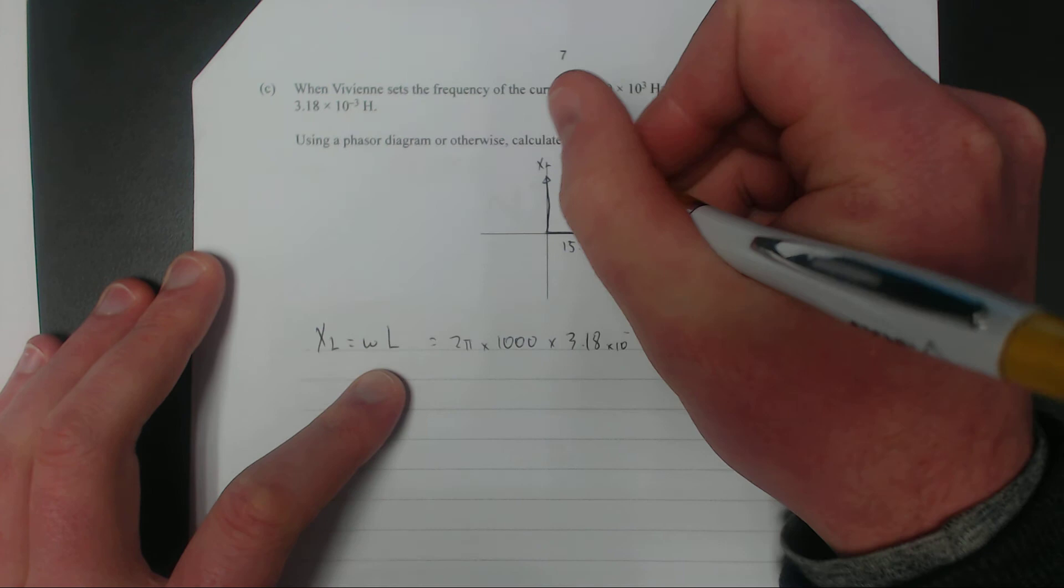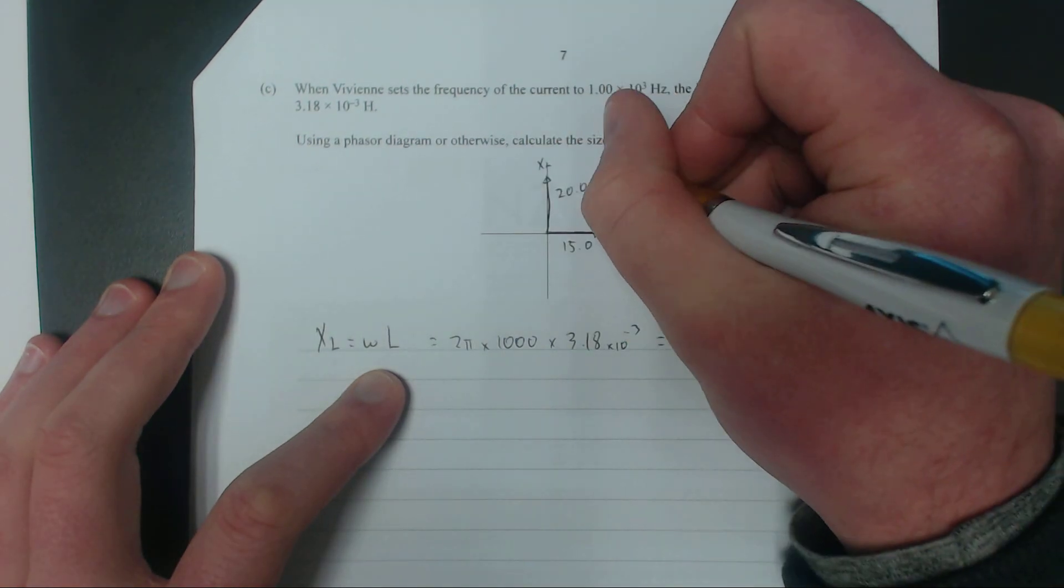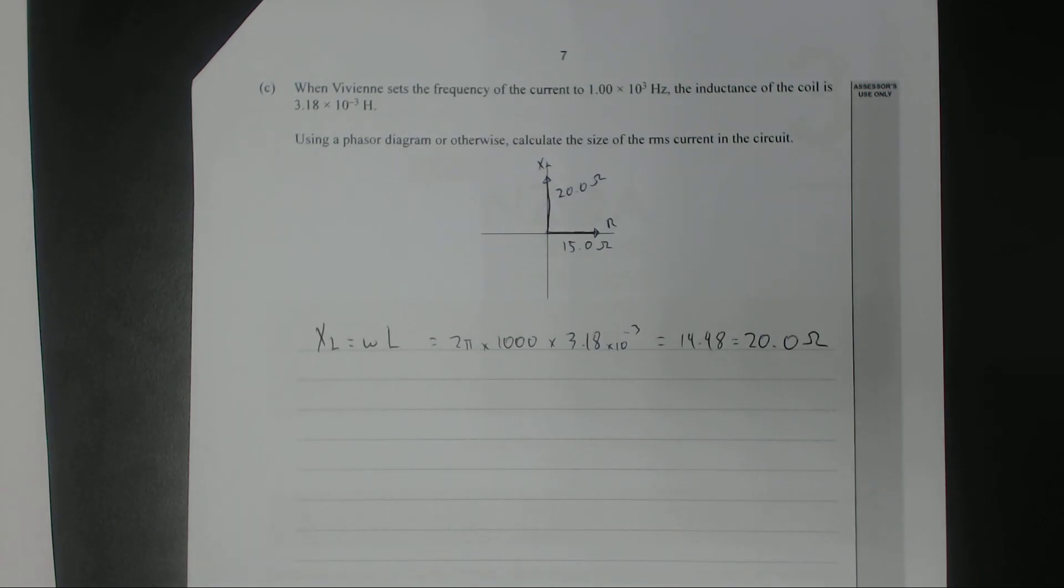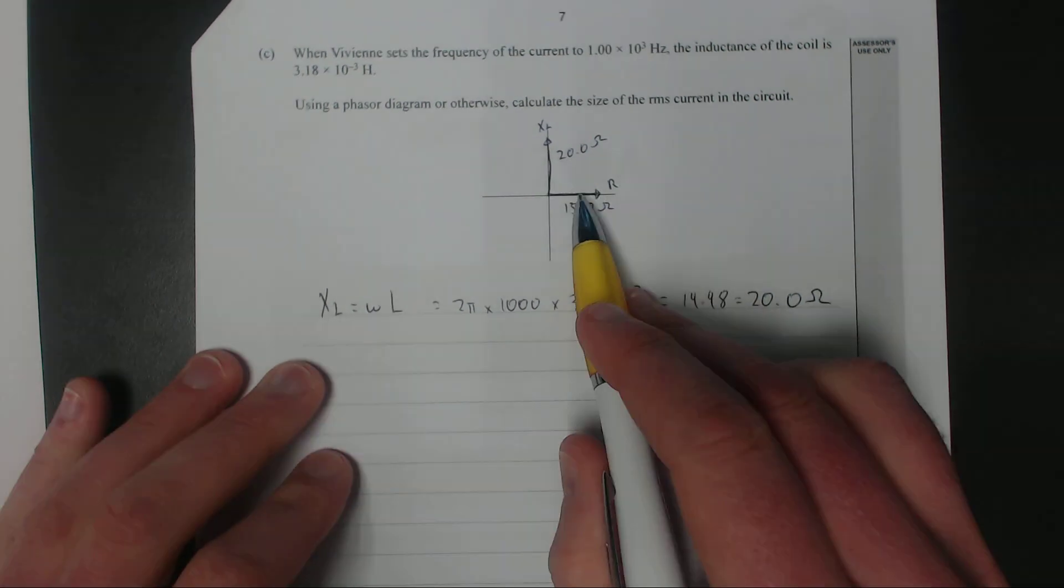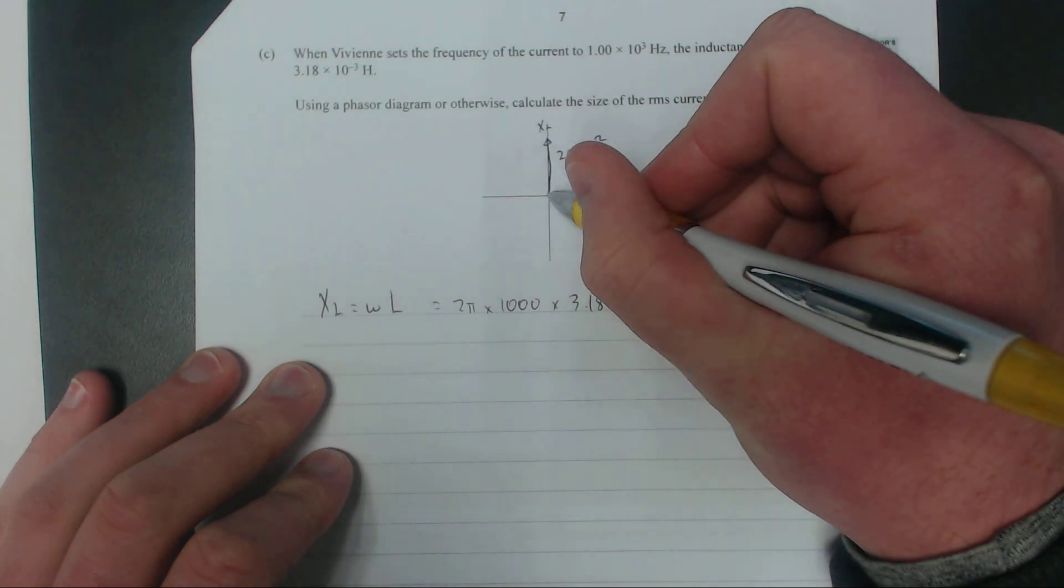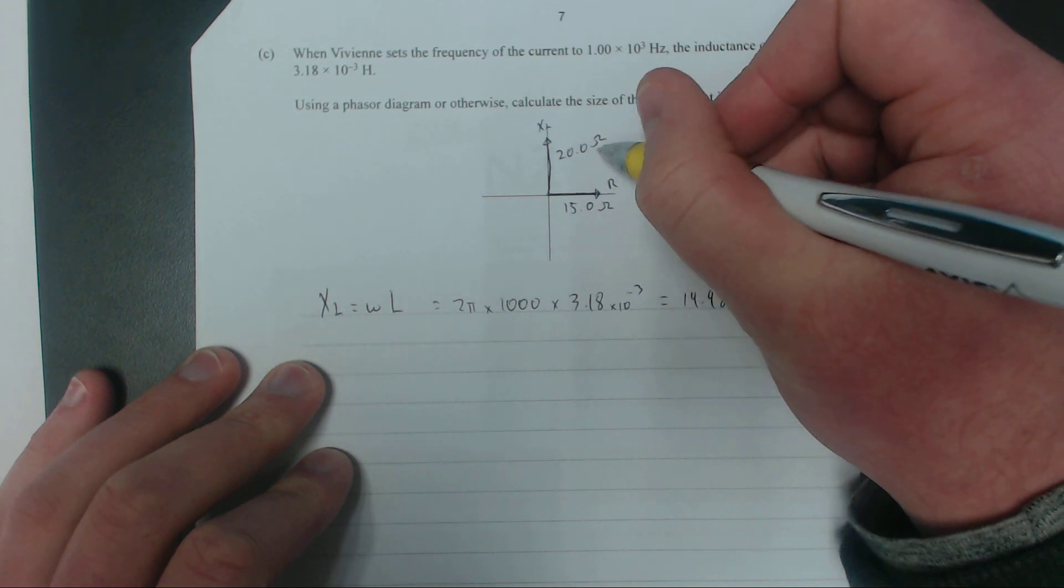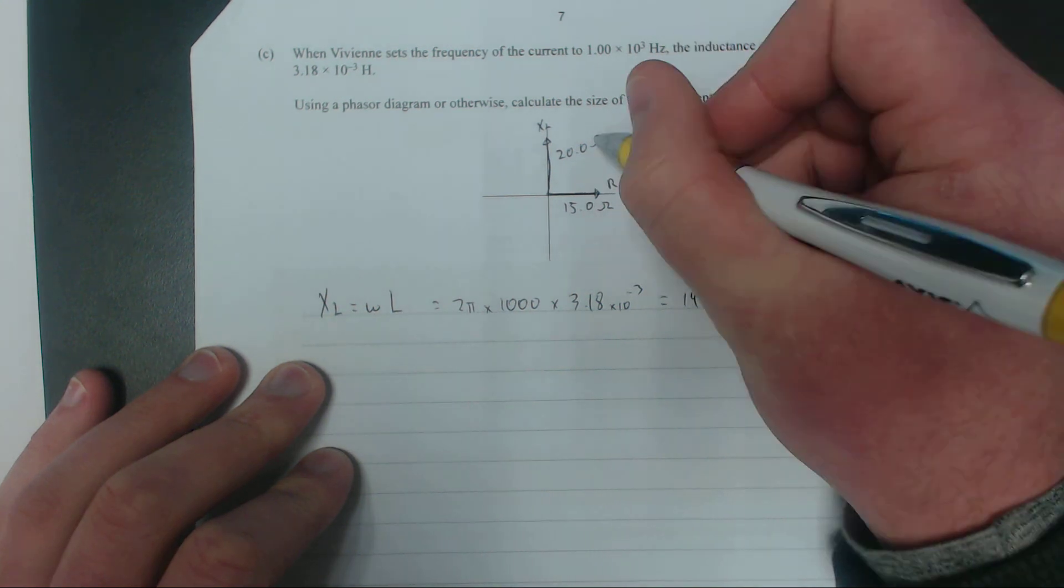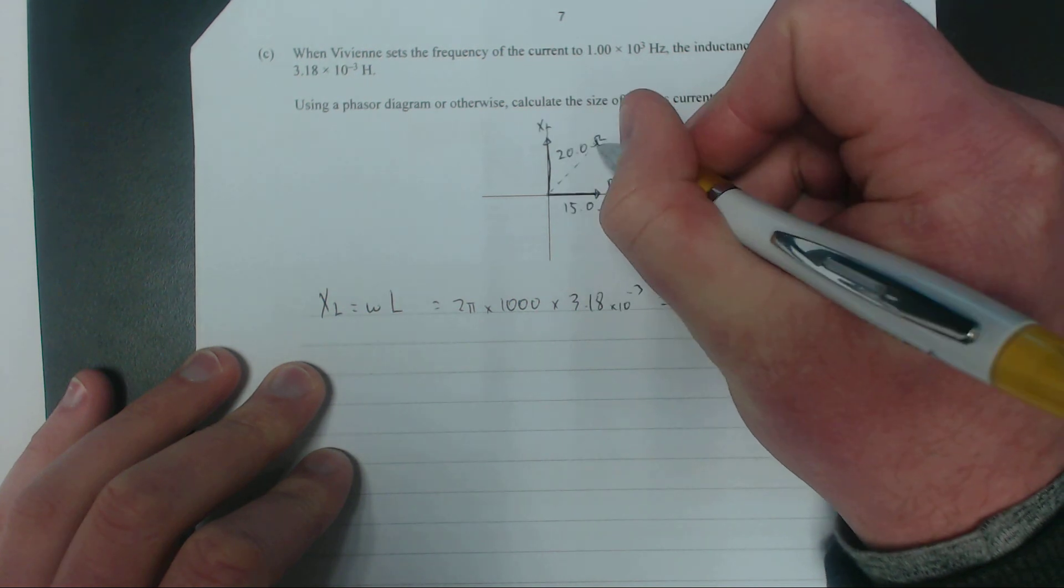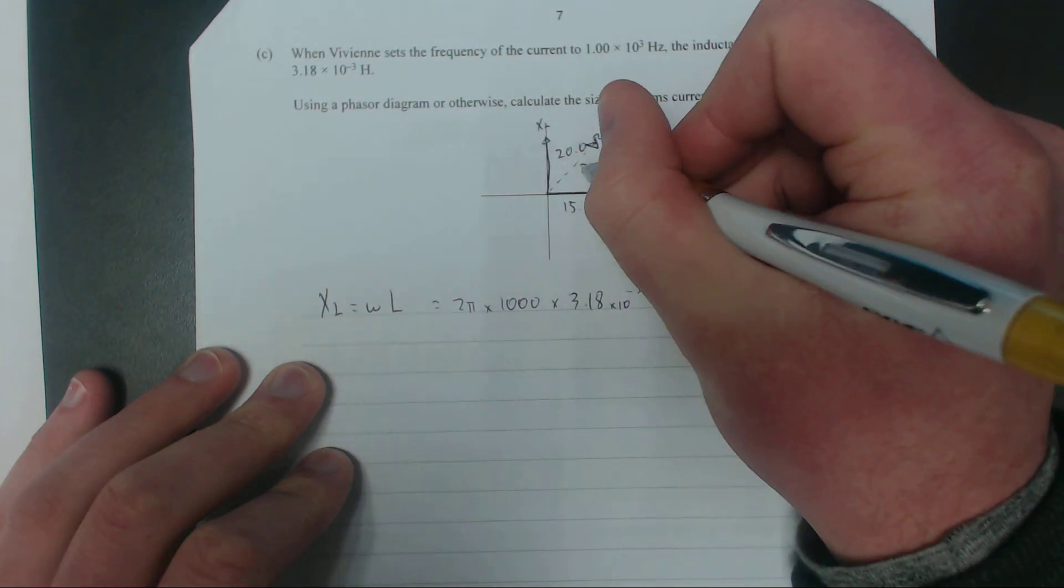Reactance, impedance, all measured in ohms because they're all a form of resistance. You'll notice this is a right angle triangle. What you're trying to find is the impedance, which is a vector. If you add these two vectors together, it's going to be here somewhere. This is your impedance, the sum of the resistance and the reactance of the circuit. You're going to have to use Pythagoras to work it out.